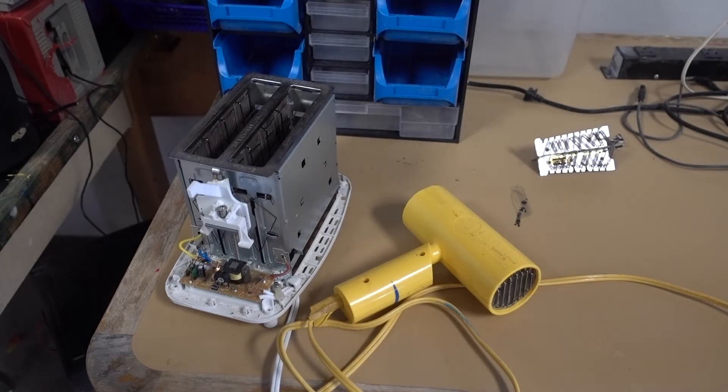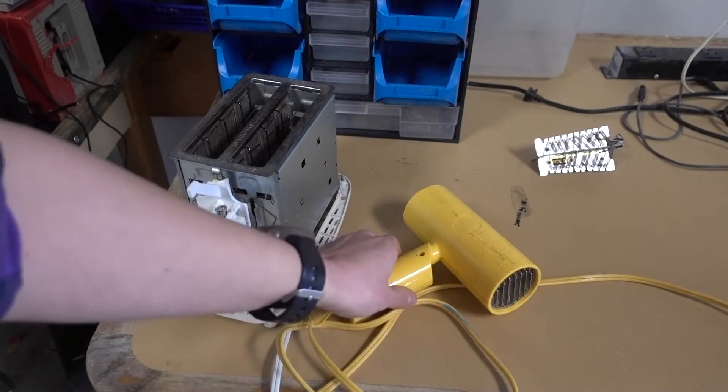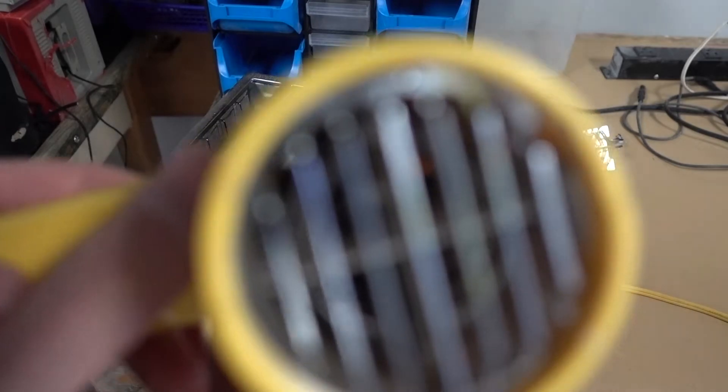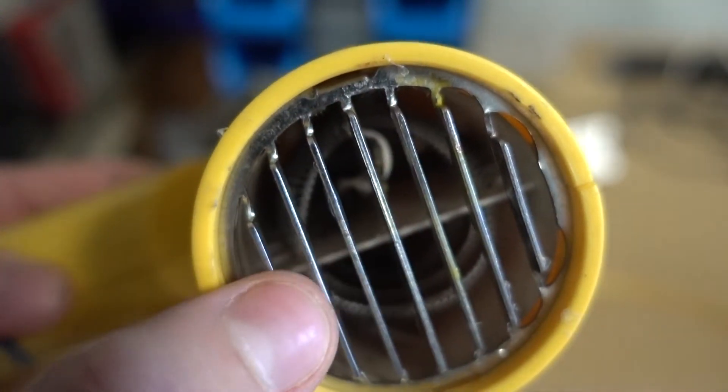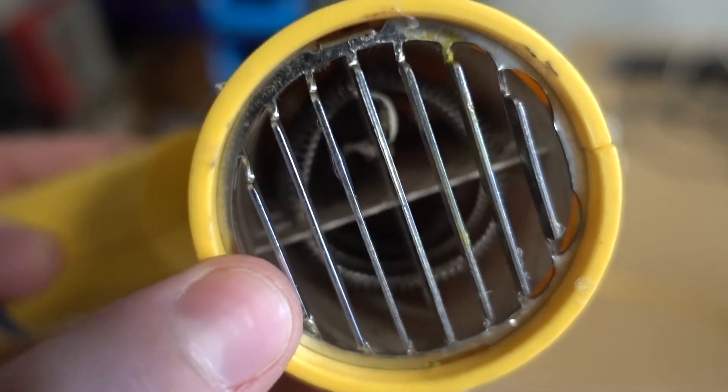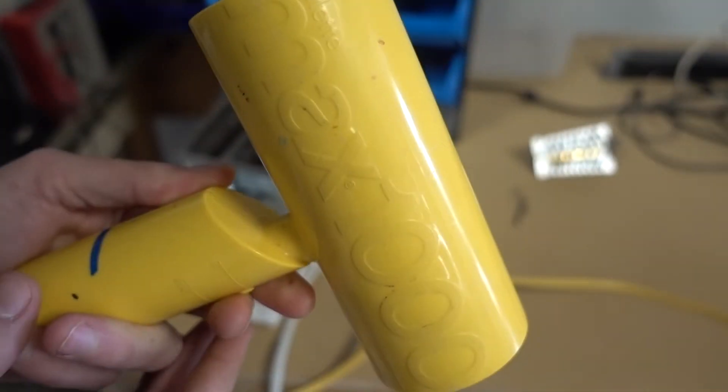Specifically what we're looking for is something called nichrome wire. In this hairdryer, for instance, if you take a look in the back end, you can see that coil of wire inside. That's what heats up to create the hot air to blow your hair.